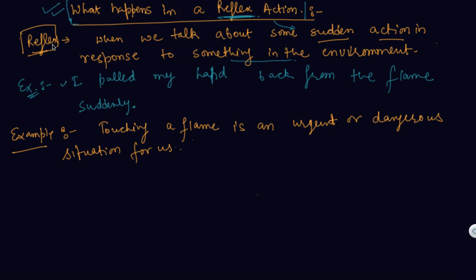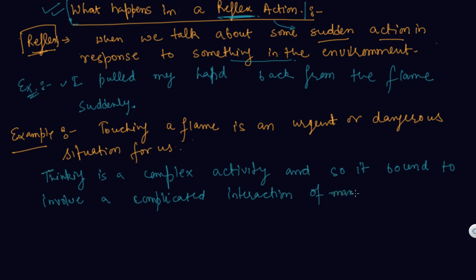So thinking is a complex activity and so it is bound to involve a complicated interaction of many nerve impulses from many neurons. So if this is the case, it is no surprise that thinking tissue in our body consists of dense networks that we have discussed about the structure of a neuron in the previous lecture also.